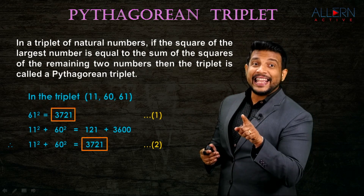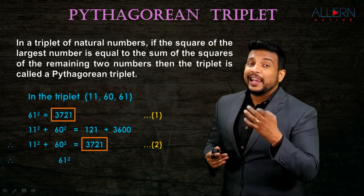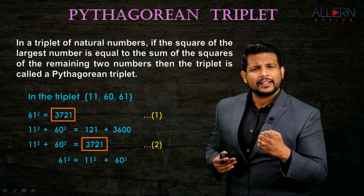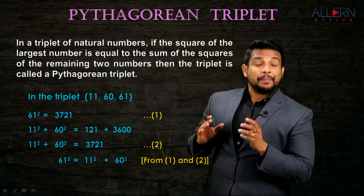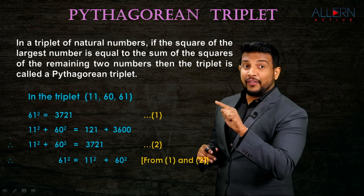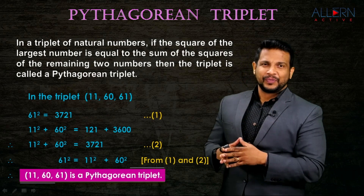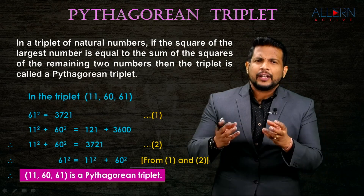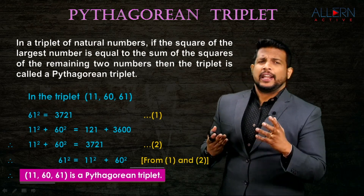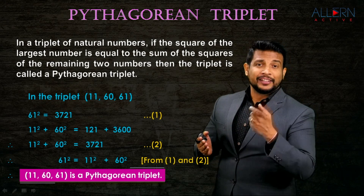That means 61² = 11² + 60². We got that from results one and two. So we can now say that the triplet 11, 60, 61 is a Pythagorean triplet. If you are given a triplet of natural numbers and asked whether it is a Pythagorean triplet, now we know how to do it. Just take the largest number.